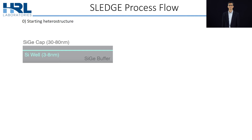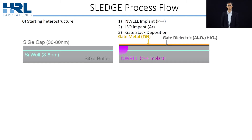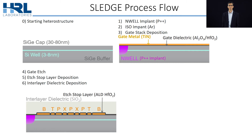I'll describe the SLEDGE process flow. First, we start with a silicon-silicon-germanium heterostructure where the silicon quantum well is about 30 to 80 nanometers below the surface. Next, we perform a high-dose phosphorous implant in regions termed N-well, and implant argon in regions that are electrically isolating. Then, with the active regions of the device exposed, we can thoroughly clean the surface and deposit the gate stack. This aggressive pre-cleaning is one of the reasons for reduced disorder. We use a gate dielectric of aluminum oxide and hafnium oxide, and gate metal of titanium nitride. We then subtractively etch away the gate metal where we don't want it using both optical and e-beam lithography, which defines the individual gates of the device.